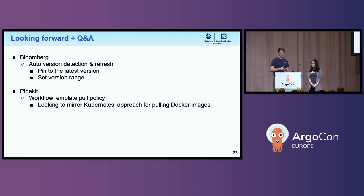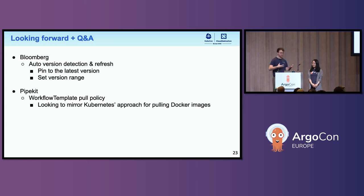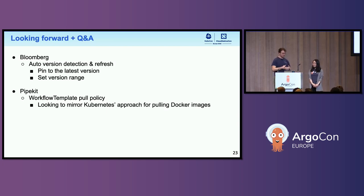On PipeKit's roadmap, over the next couple quarters we're interested in figuring out a good workflow template pull policy — similar to what Kubernetes does for Docker images. We want to figure out whether, when there's a change to a workflow template, it gets pulled into clusters that already have it instantly, or if there's an override, or if it should never be pulled unless a workflow is being invoked. We'd definitely appreciate any design thoughts on that.